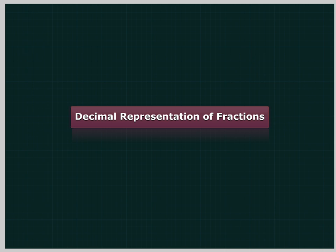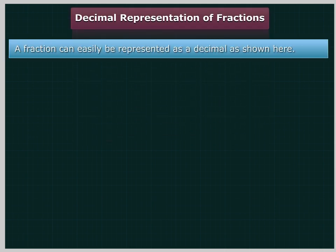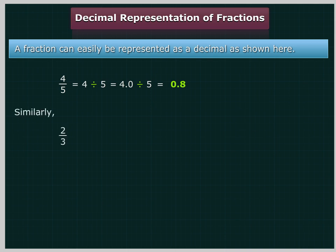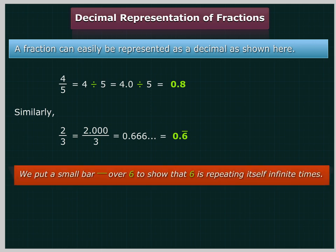Decimal representation of fractions: A fraction can easily be represented as a decimal. For example, 4 upon 5 is equal to 4 divided by 5, which is equal to 4.0 divided by 5, equal to 0.8. Similarly, 2 upon 3 is equal to 2.000 divided by 3, which is equal to 0.666... We put a small bar over 6 to show that 6 is repeating itself infinitely.